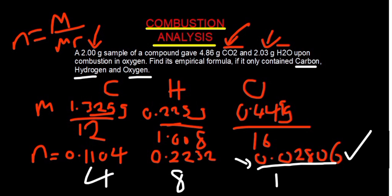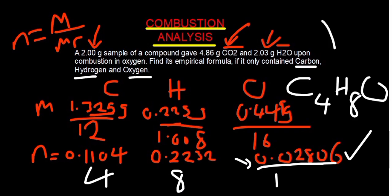To come up with our empirical formula, we write C₄H₈O. That is our empirical formula — it gives us the ratio of these elements in that compound. This is all about combustion analysis. Thank you very much for watching.